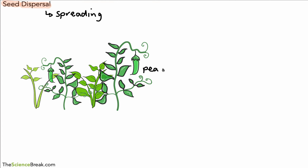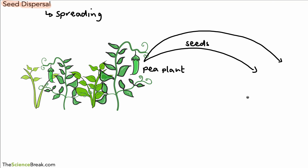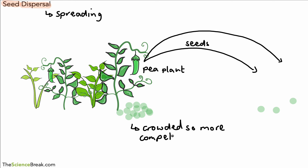Here is an example: we've got a pea plant, and what these plants tend to do is spread their seeds — the peas, which are the seeds — quite a distance away from the parent plant. If they didn't do that, the seeds could fall near the parent plant, and as you can see they're quite crowded, quite closely packed together. So these are crowded, which means there is more competition between the seeds.